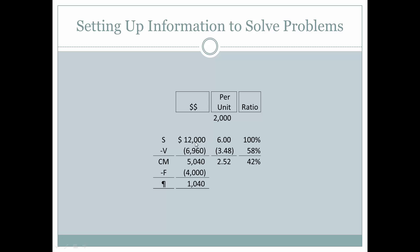The ratios are indexed upon sales, so 100% is always going to be the ratio associated with sales — that's $12,000 divided by $12,000, or on a per-unit basis, $6 divided by $6. We can derive the variable ratio by taking the variable expenses divided by sales, which means 58% is related to variable expenses. On a per-unit basis, $3.48 divided by $6 gives us the 58% ratio. Because sales are 100% and variable expenses are 58%, our contribution margin is 42%. For every dollar sold, 58% of those costs are associated with variable costs, and the remaining 42% is the amount left over for the company to spend on its fixed expenses.